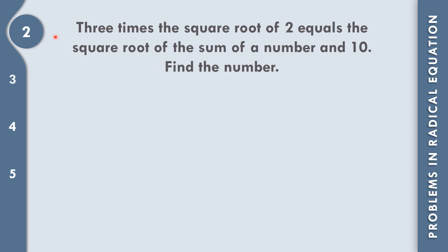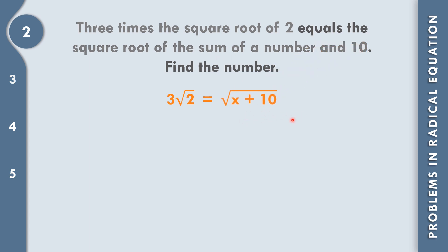Let us solve problem number 2. Three times the square root of 2 equals the square root of the sum of a number and 10. So, 3 times the square root of 2 — that means 3√2 equals the square root of x plus 10, where x represents the unknown number.